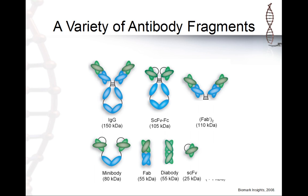As we understand more molecular biology, we started to do protein engineering of monoclonal antibodies. Here you can see different kinds of fragments we can use as therapeutic drugs. For example, you can cut a monoclonal antibody with pepsin or papain and generate Fab fragments, minibodies, diabodies, and so on.